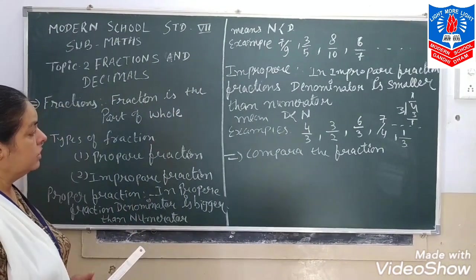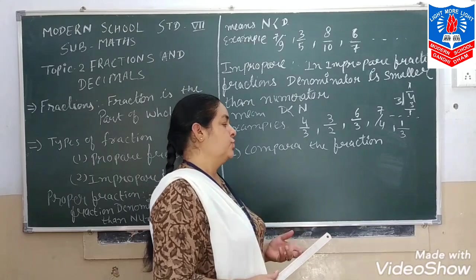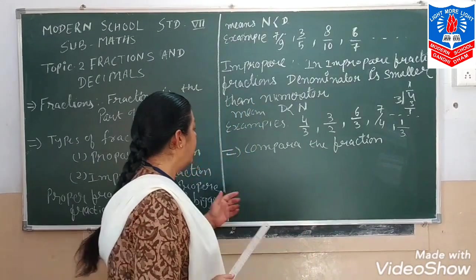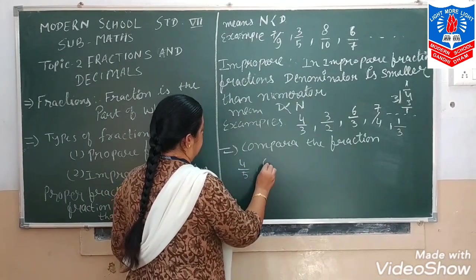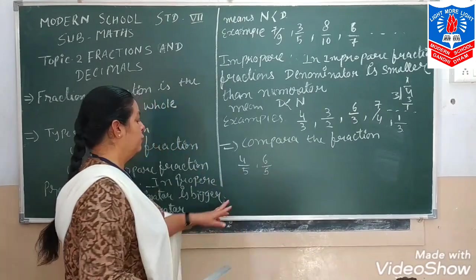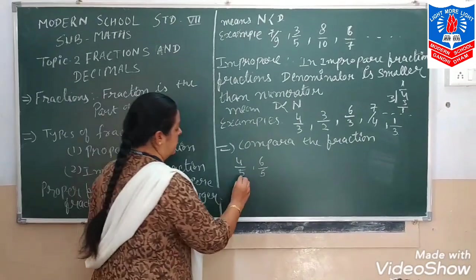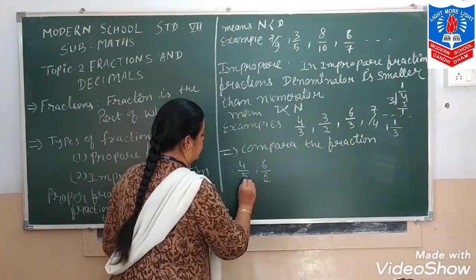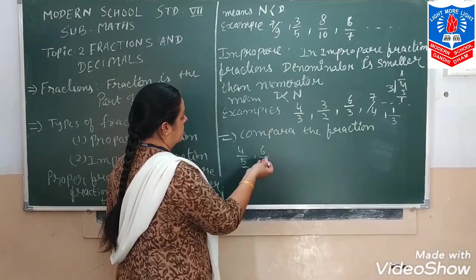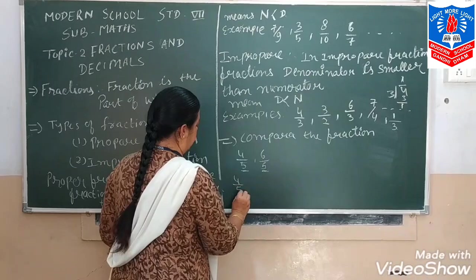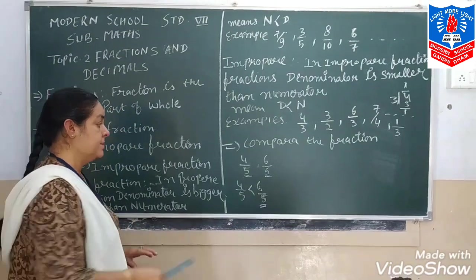Now we come to comparing fractions. How do we compare the fractions? Which one is big and which one is small? For example, 4 by 5 and 6 by 5 — there are 2 fractions. See, in both fractions the denominator is the same: 5 and 5. We compare the numerators: 4 and 6. Which one is big? 6 is big. So 6 by 5 is the bigger fraction.